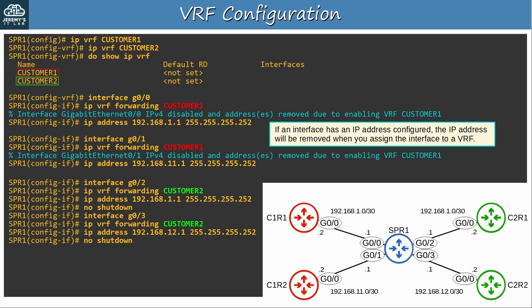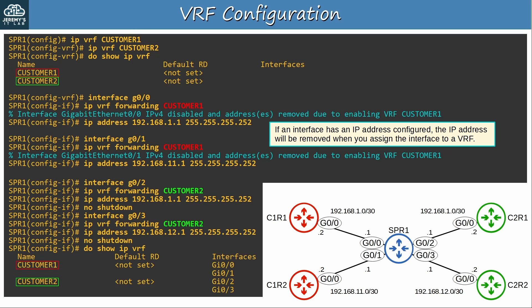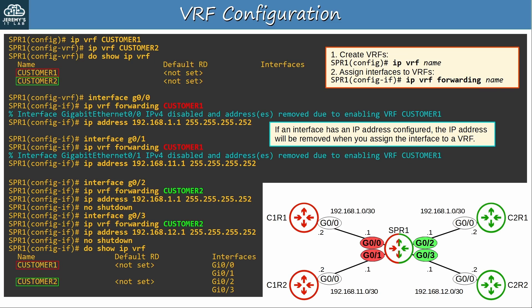I then configured G0/3 as well. I confirmed the VRFs again, and now you can see the interfaces listed in the output. SPR1 is now divided into two separate virtual routers: the customer1 VRF, which includes G0/0 and G0/1, and the customer2 VRF, which includes G0/2 and G0/3. Basic configuration of VRF Lite is simple — create VRFs with the 'ip vrf' command, and then assign interfaces to VRFs with the 'ip vrf forwarding' command.